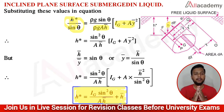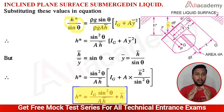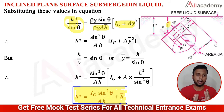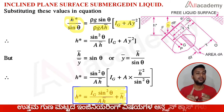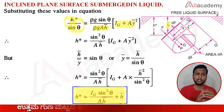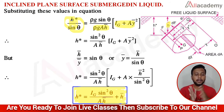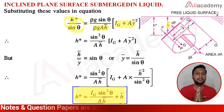In exams, questions on vertical planes or inclined planes submerged in a liquid are the two derivations repeatedly asked for 10 marks, along with definitions of center of pressure and total pressure for 1-2 marks each. The remaining 8 to 10 marks are allotted for these derivations.